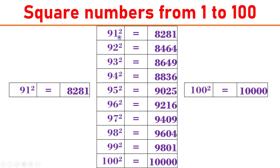91 square equals 8281. 92 square equals 8464. 93 square equals 8649. 94 square equals 8836. 95 square equals 9025.